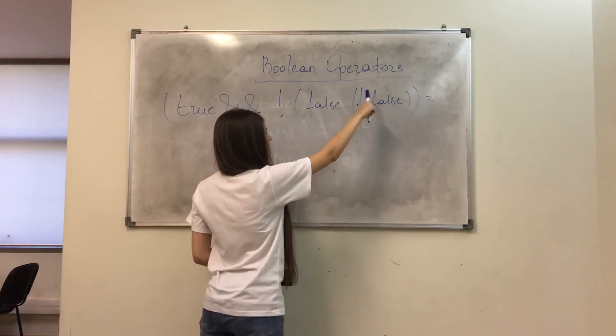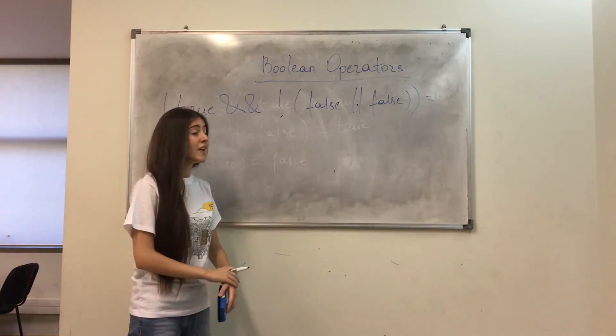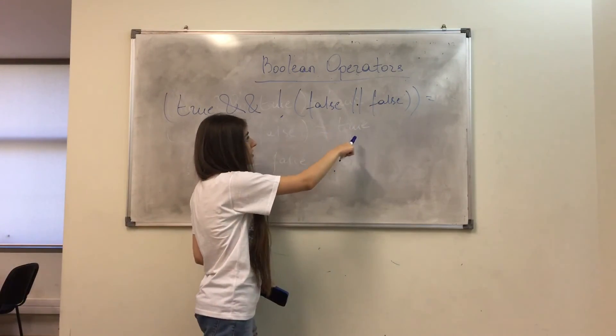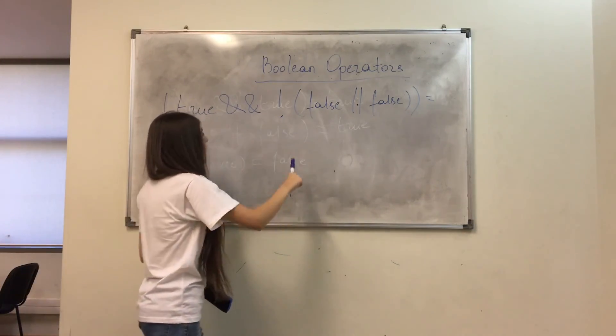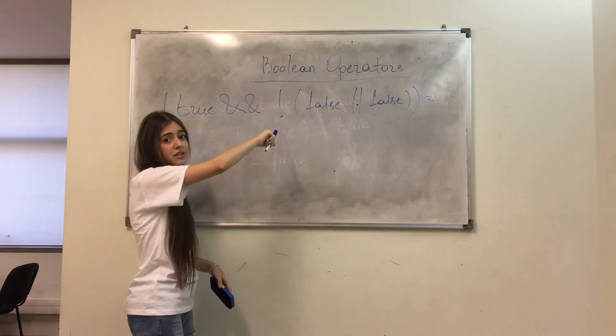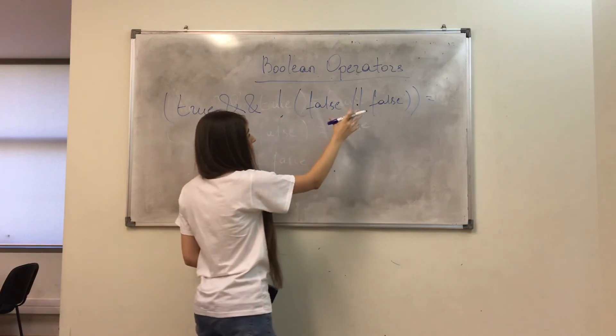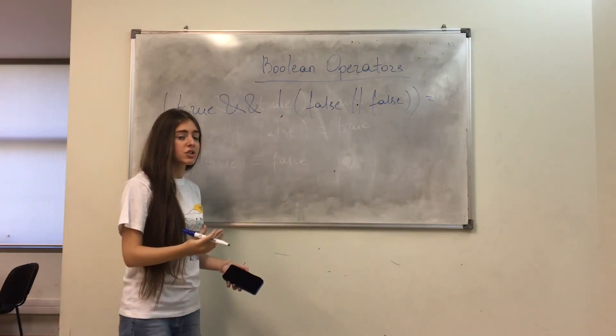So, in here, we get FALSE, because as I said, for OR operator, at least one of the conditions should be true. But, we have here NOT operator, which changes the FALSE condition into TRUE condition.